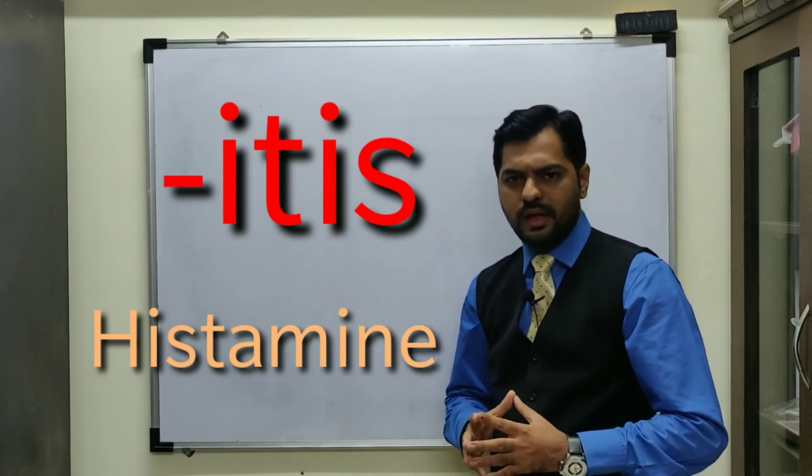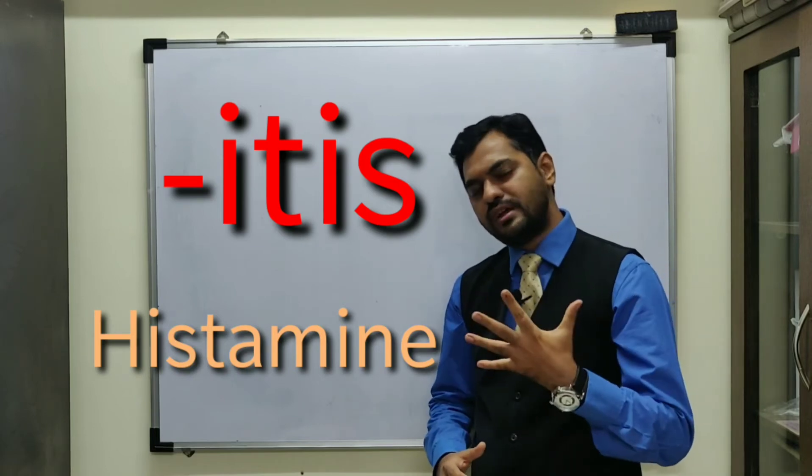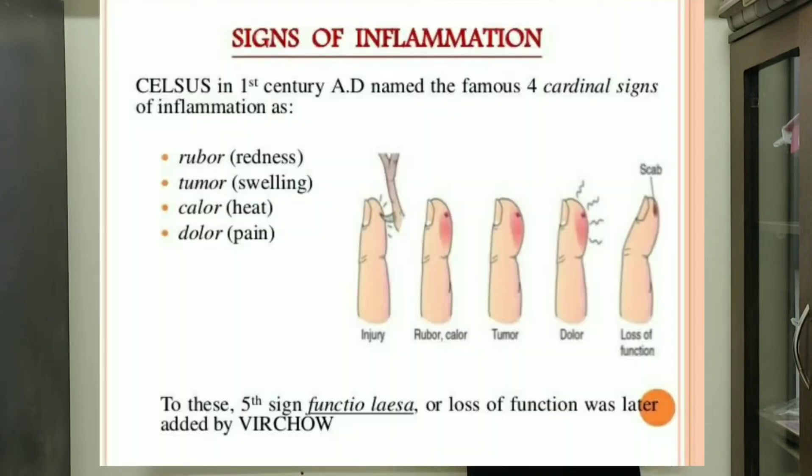What are these inflammatory signs? There are mainly five major signs of inflammation: redness, swelling, pain, heat, and loss of function. These five signs represent the inflammatory responses because of histamine.